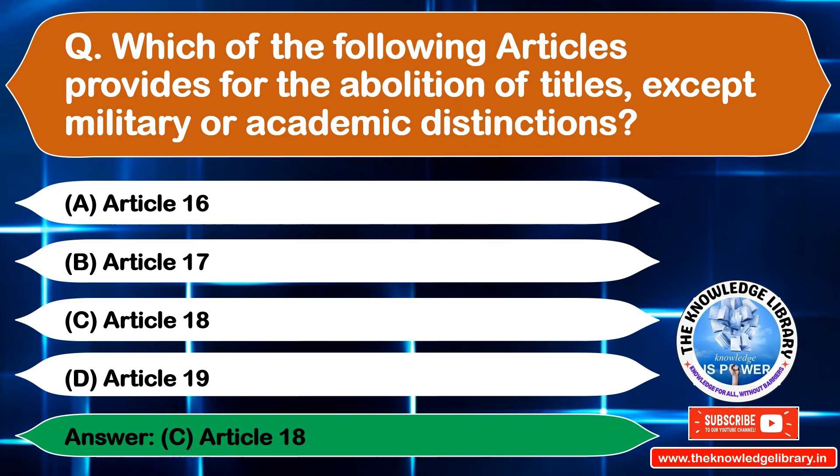The next question is: which of the following is not a fundamental right under the Indian Constitution? Option A: Right to privacy, Option B: Right to education, Option C: Right to freedom of religion, Option D: Right to constitutional remedies. The correct answer is Option A: Right to privacy.